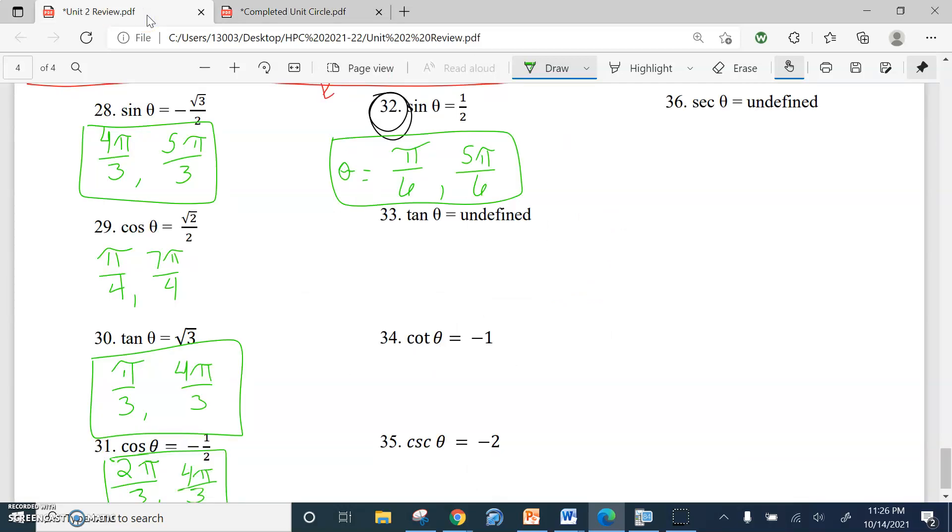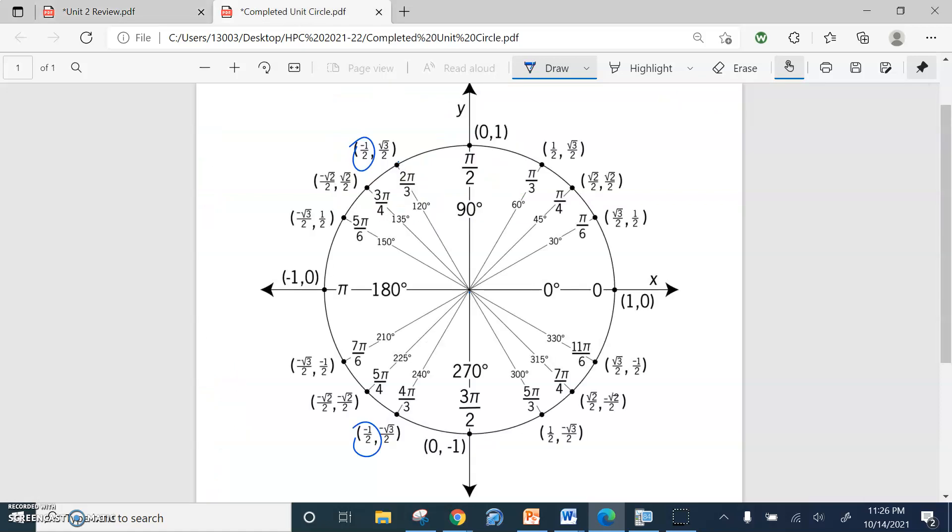33, tangent is undefined. Okay, well, what does that mean? What in the heck is that? Well, what it's saying is tangent is going to be, again, sine divided by cosine. So we're trying to figure out when we're dividing by zero, right? Like, that's how you get an undefined answer, dividing by zero. And it really doesn't matter what's on top, because anything divided by zero doesn't exist.